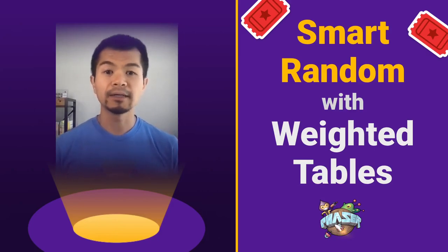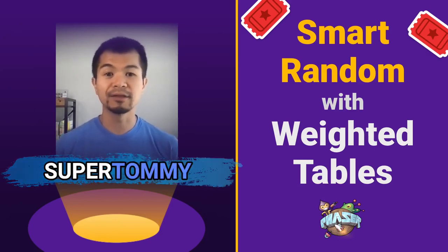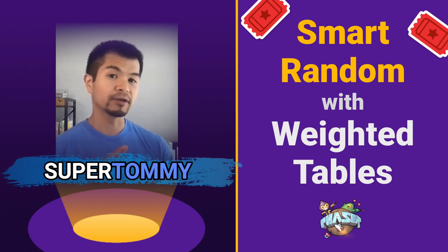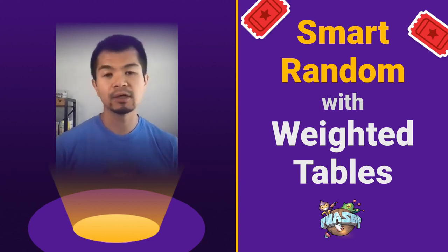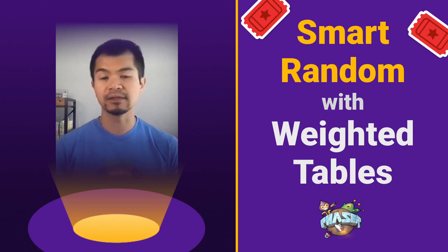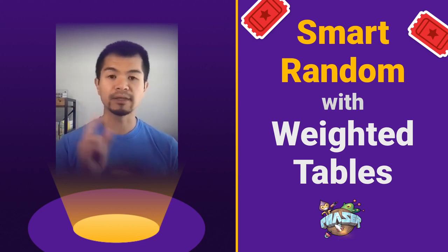Welcome back to Arcade. I am Super Tommy and in this video we're going to look at smart random with weighted tables. We're going to use our MobX game state example from our previous video where we had a spaceship you can collect coins and there's only one type of coin in that video.